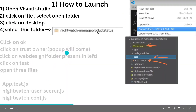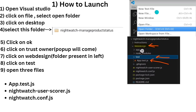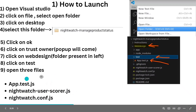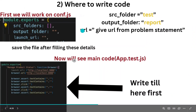When you find the folder 'nightwatch-manage-product-status', click on Open. A pop-up will appear — accept it. Now click on the 'web-design' folder in the left panel. Click on 'test', and you will get the app.test.js file. We need to open three files in parallel: app.test.js, nightwatch-users-code.js, and nightwatch.conf.js. Double-click on each to open them.